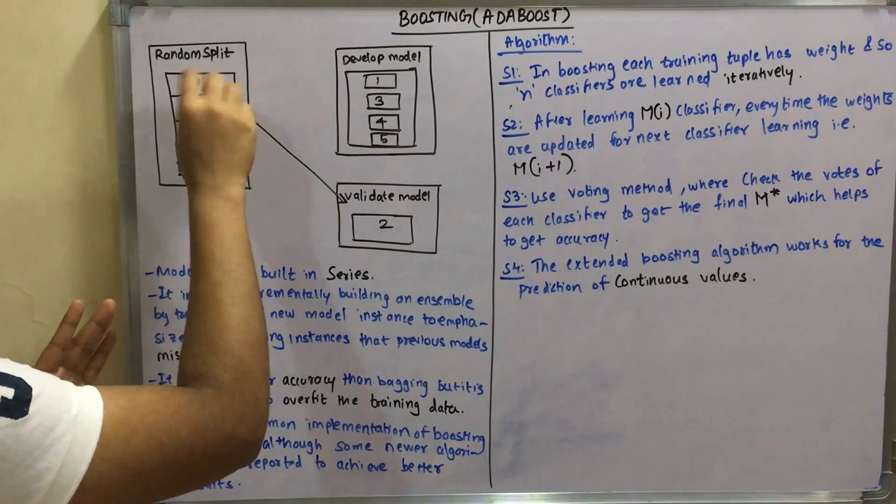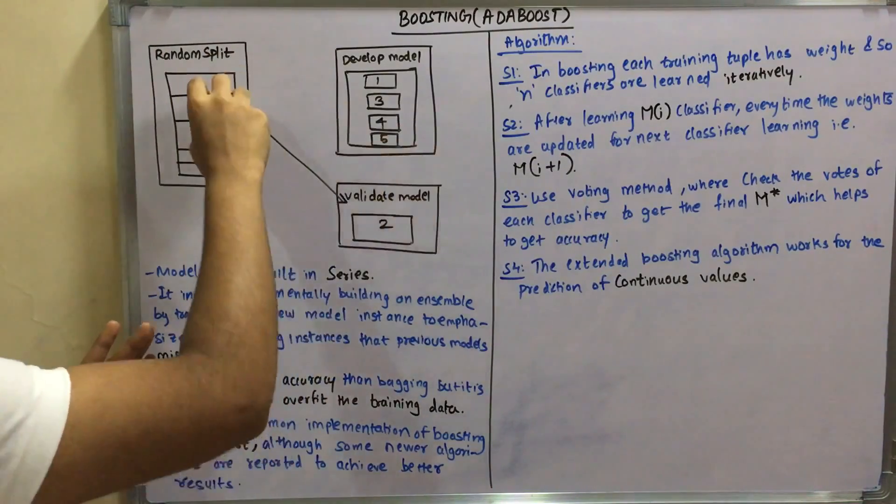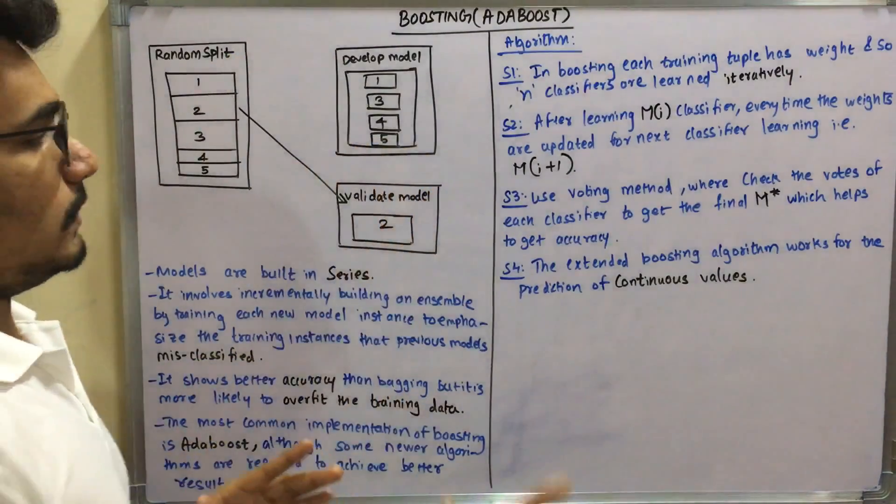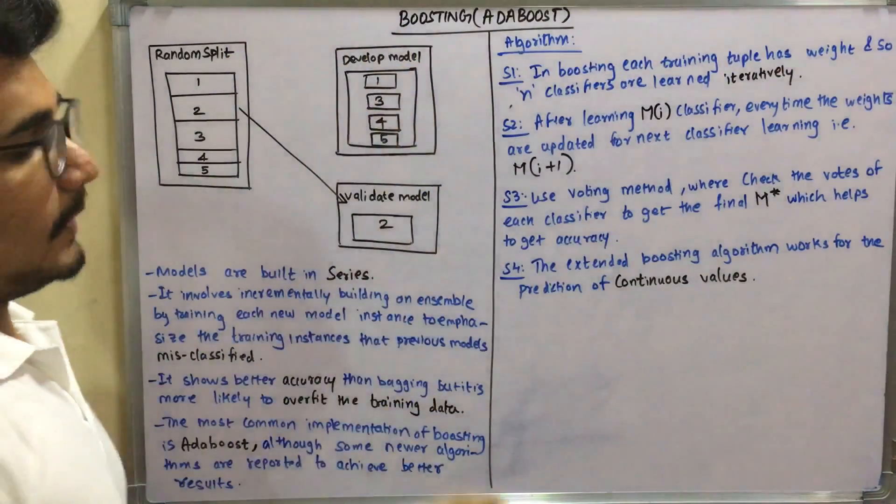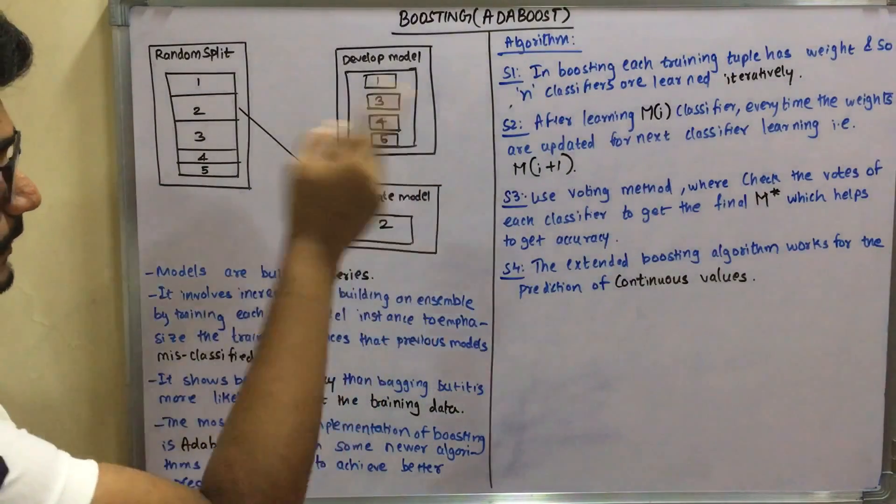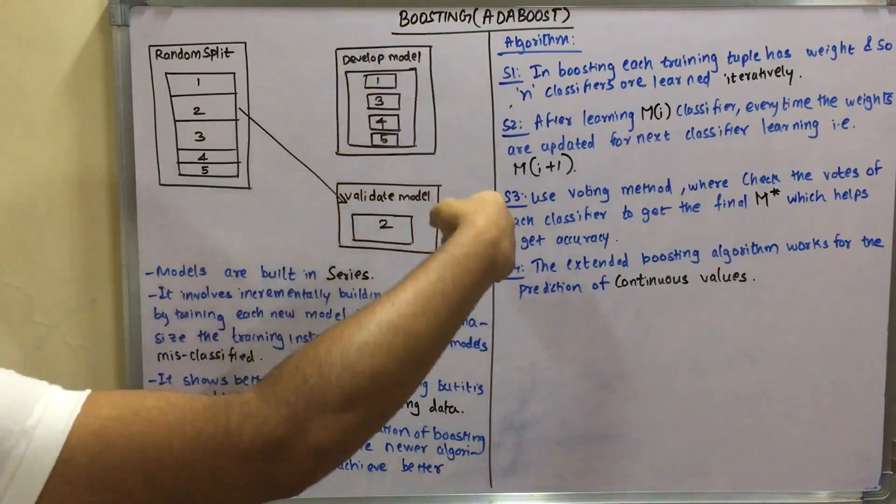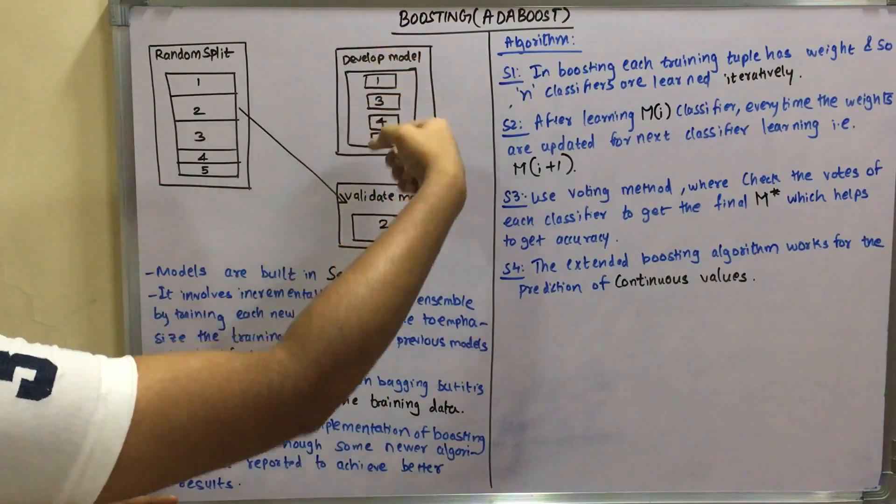Like one value or one split. For example in this case I have taken two outside and kept it for validation. So each of the models under development will be validated by two. Likewise, I take three and then validate it against the other four values like one, two, four, and five.